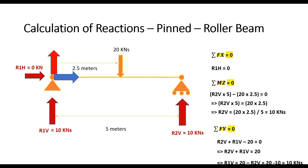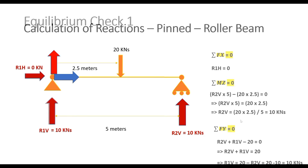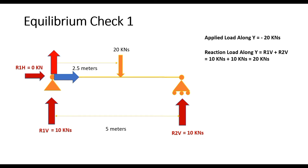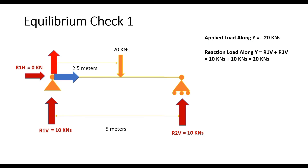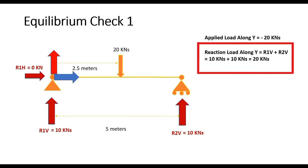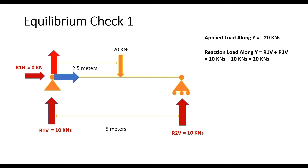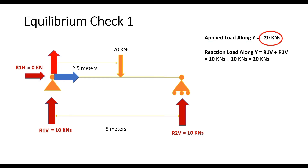With the reactions solved, let us see how we obtain the statics check results. Considering only the applied loads along the Y axis, it would be minus 20 kN, because the applied load acts opposite to the positive global Y axis. The reactive loads along Y are R1V + R2V = 10 + 10 = plus 20 kN, acting in the positive global Y direction. Thus the applied load of minus 20 kN and the reaction load of plus 20 kN are equal and opposite, and the equilibrium condition is satisfied.